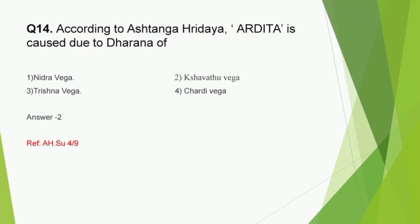Question number 14: According to Ashtanga Hridaya, Ardhita is caused due to dharana of Nidravega, Kshavatuvega, Trishnavega, or Chhardivega. The correct answer is option 2, Kshavatuvega. This question is from Ashtanga Hridaya Roganutpadaniya Adhyaya. Importance should be given to specific diseases mentioned in certain Vegadharana, like Badhirya in Trishnavega dharana, and Manyastambha seen in Bhashpa as well as Kshavatuvega dharana. Also note striking treatment protocols like Arkavilokanam in Kshavatuvega dharana, Abhyangam with Ksharalavana Taila in Chhardivega dharana. Compare the Lakshanas and treatment protocols with those in Charaka Sutra 7th chapter.